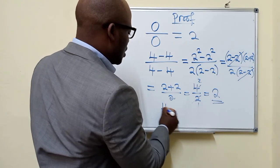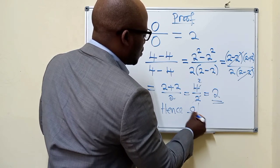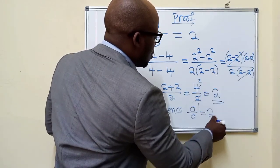Hence, 0 over 0 is equal to 2. We've gotten it.